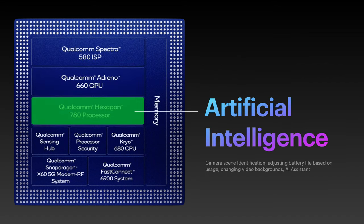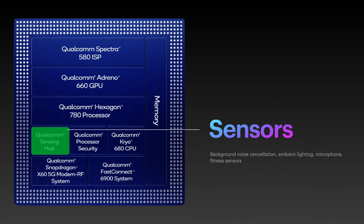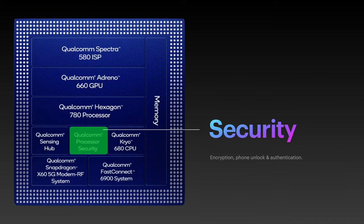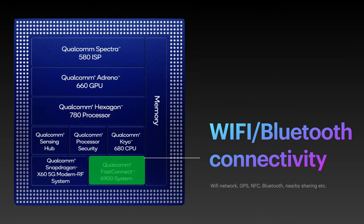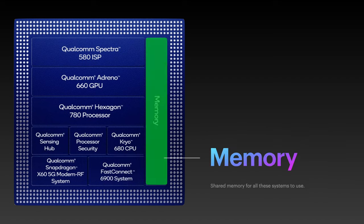The fourth part handles all artificial intelligence work on your phone — AI assistants like Siri, Bixby, and Google Assistant, camera scene identification, automatic best settings, and adjusting battery life based on your usage. The fifth part manages various sensors on your phone. The sixth handles security, as simple as biometric scanning for locking and unlocking your phone. The seventh manages GSM and mobile networks. The eighth handles Wi-Fi and other connectivity like NFC and Bluetooth. Lastly, there is cache memory for all these components to use and operate.